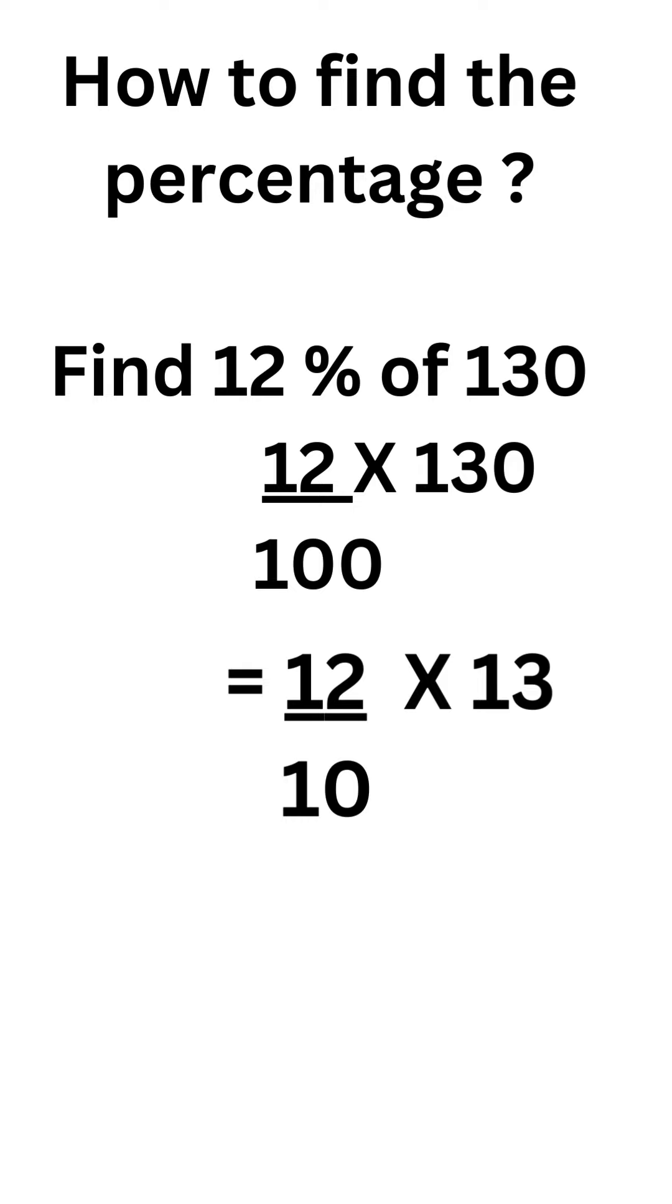So if we multiply 12 and 13, we will get 156. But we have left with the 10 in the denominator. So consider the zero. How many zeros are left? Only 1.